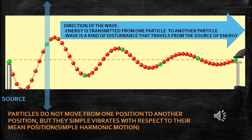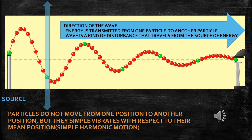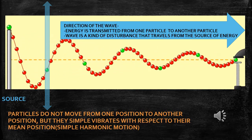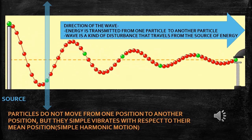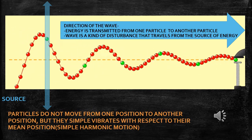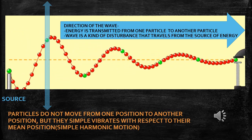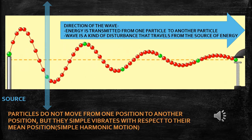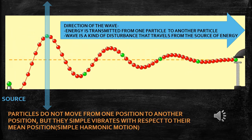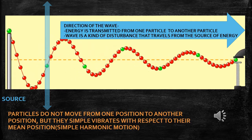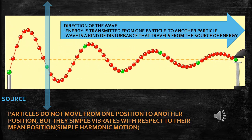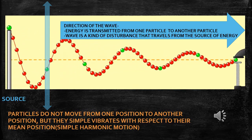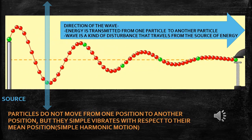Each particle receives energy from its predecessor, and after receiving the energy the particle starts vibrating in simple harmonic motion. No particle is displaced from its position — each particle simply vibrates with respect to its mean position in simple harmonic motion. Here, the disturbance alone is moving from one end to another, that is, energy alone is transmitted from one end to another end.